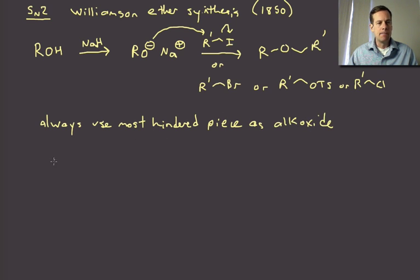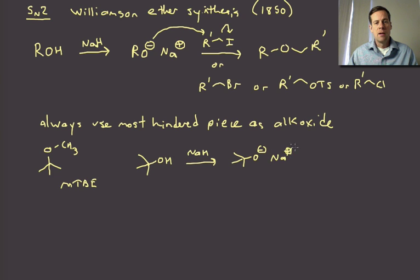So, for example, if I wanted to make, let's just go back and use our tert-butyl. Let's say we wanted to make MTBE, right? Methyl tert-butyl ether. The way that we would want to do this is to take our tert-butyl and deprotonate that piece. So we get to sodium tert-butoxide and then alkylate that with methyl iodide. So there we get to our MTBE.